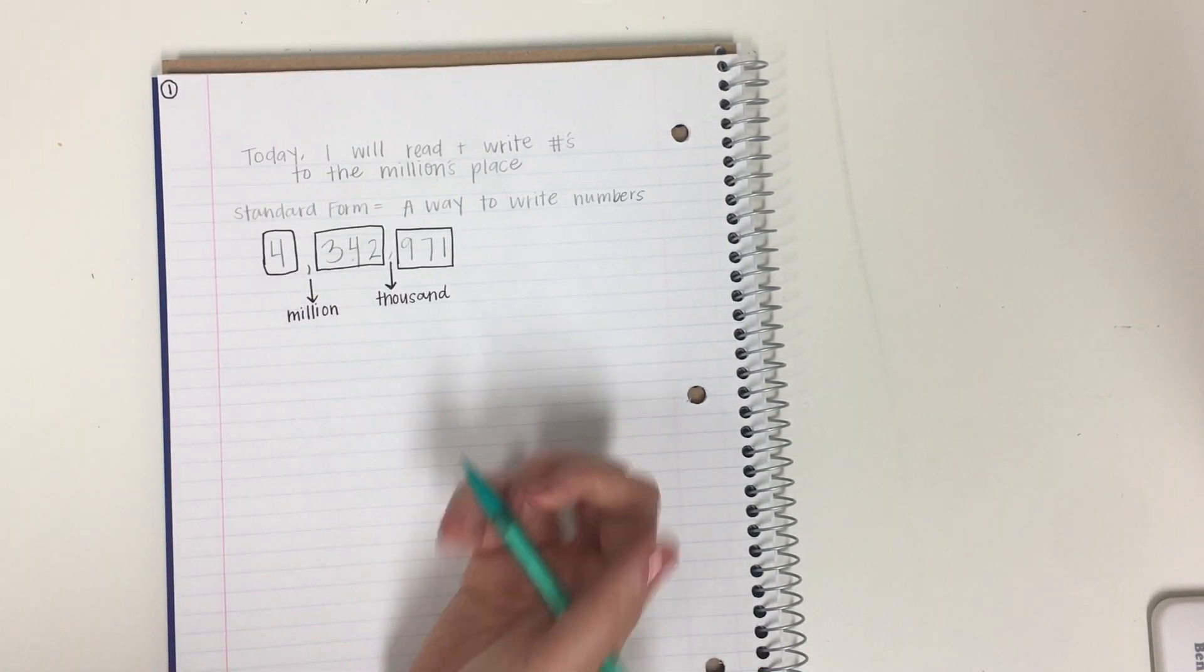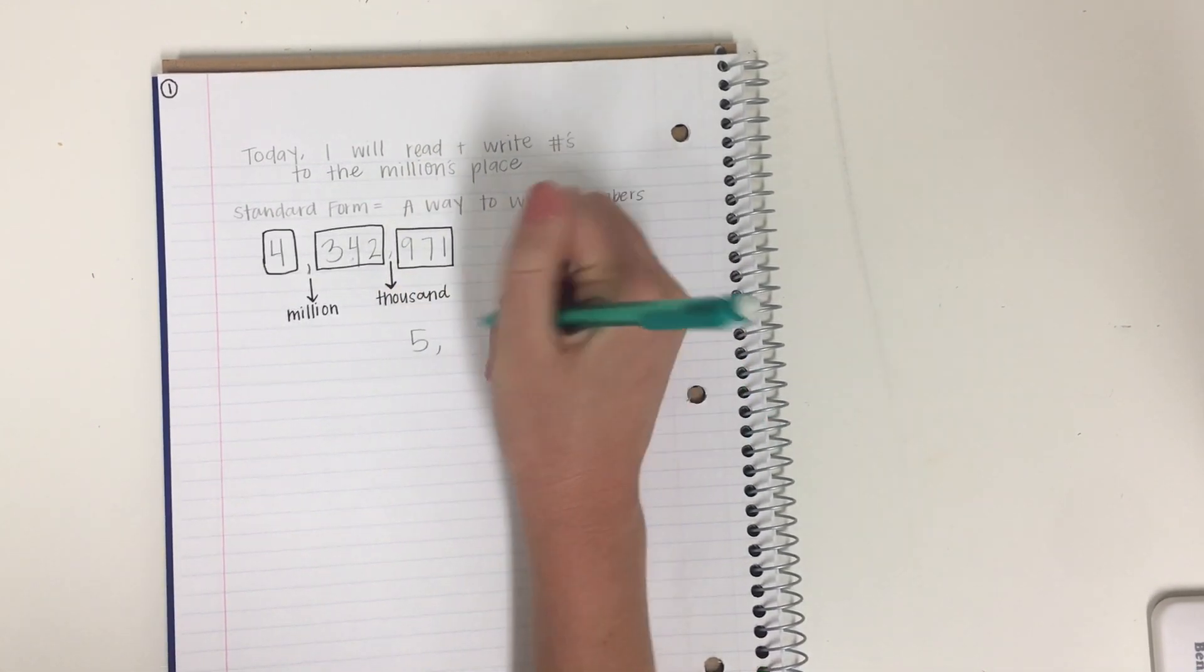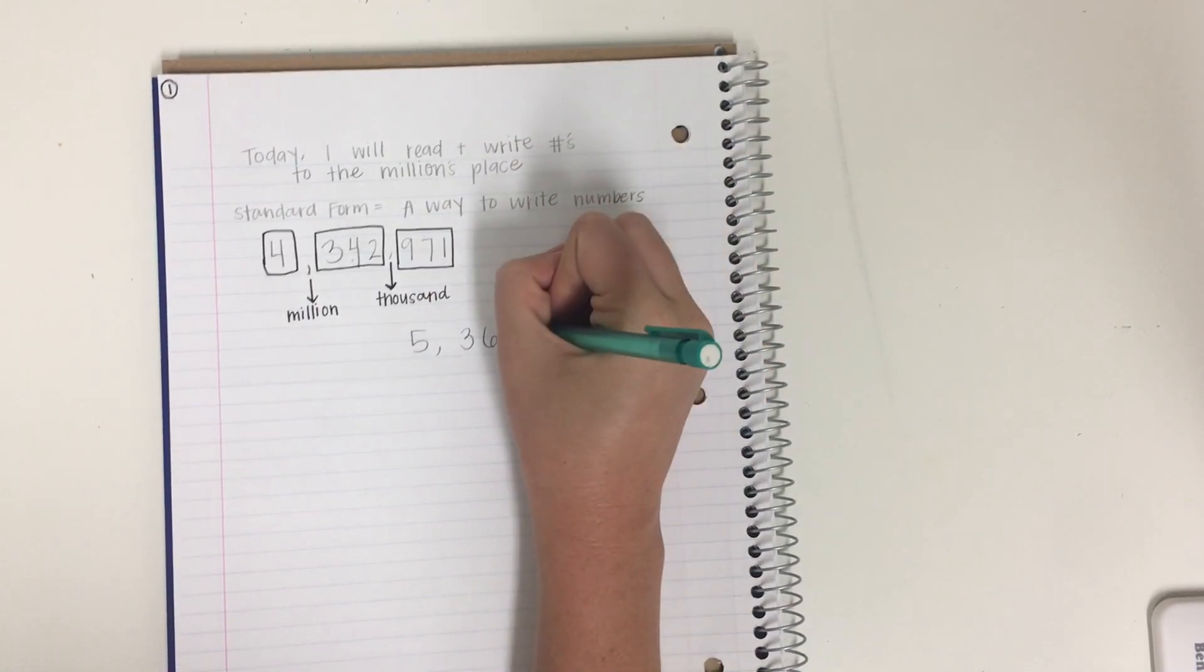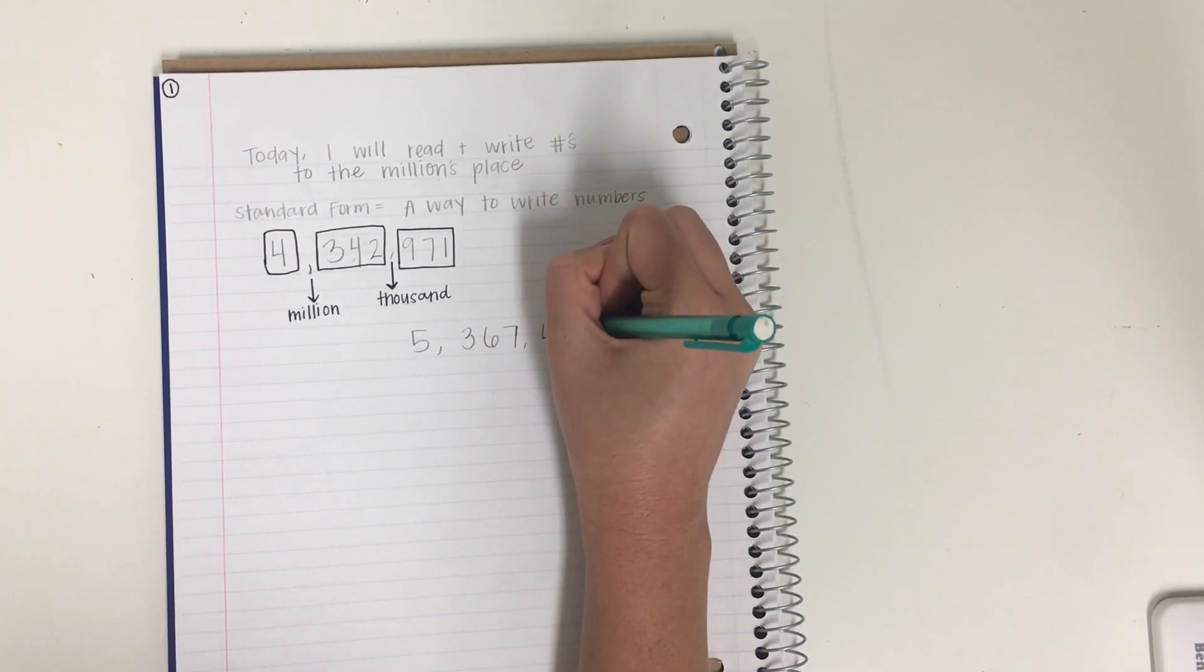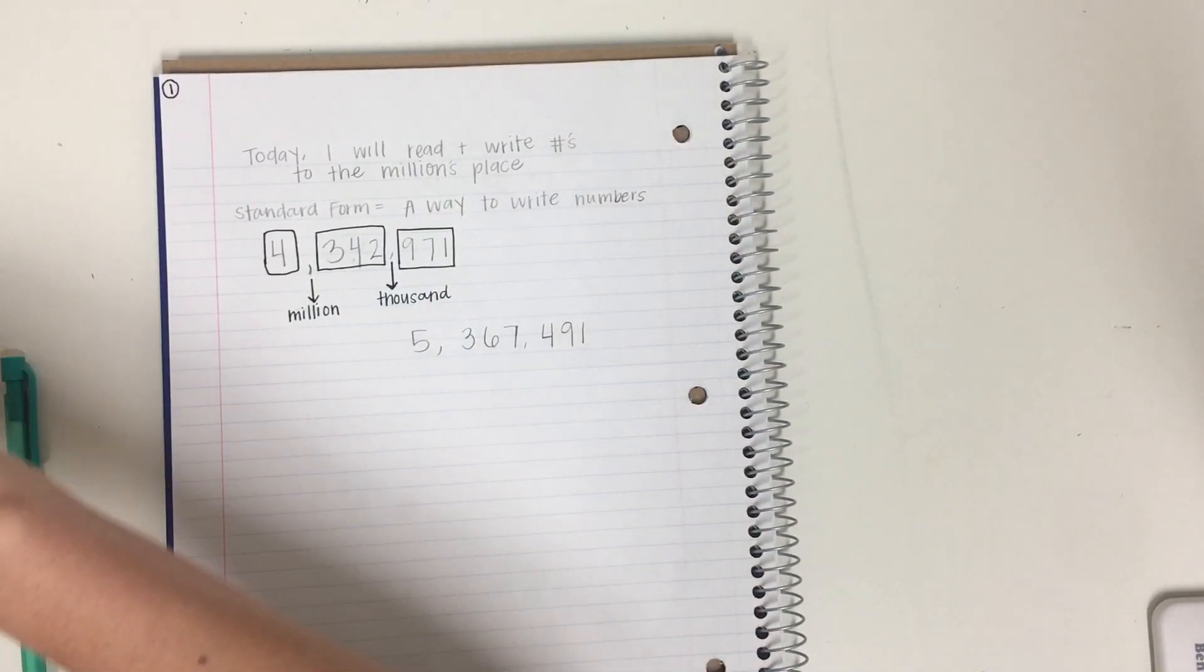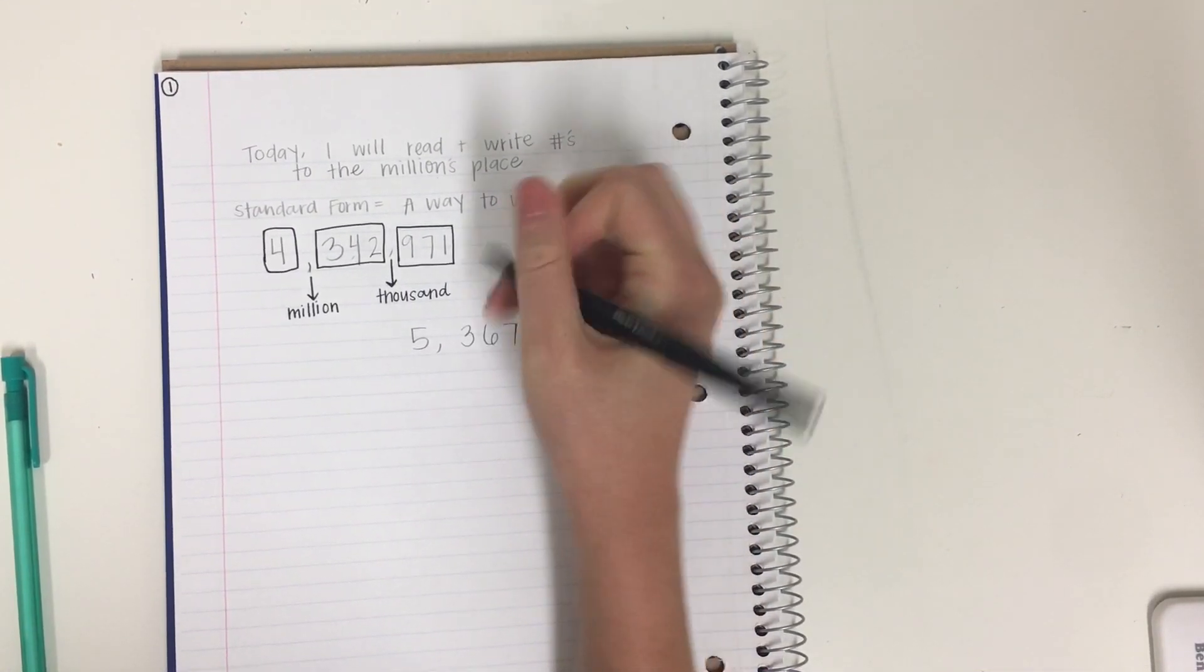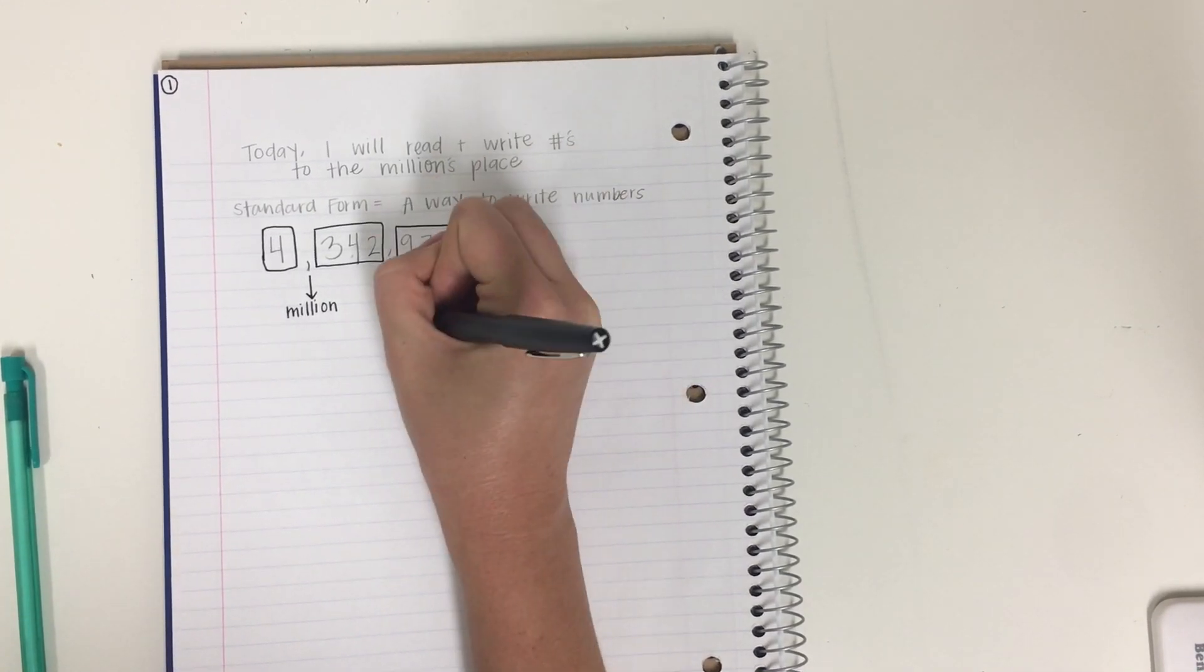Okay? Let's do another one. Let's say our number is... So the first thing I'm going to do is I'm going to put my boxes around. Now, these boxes stand for the periods.